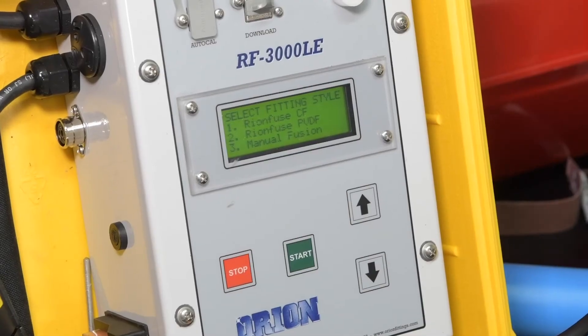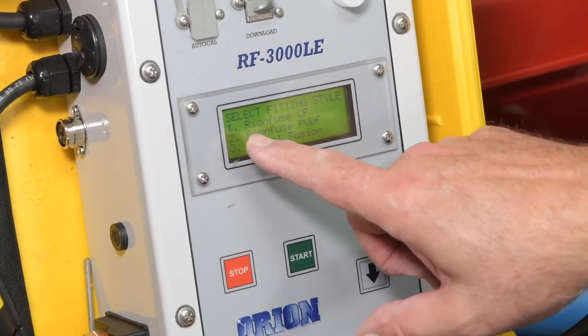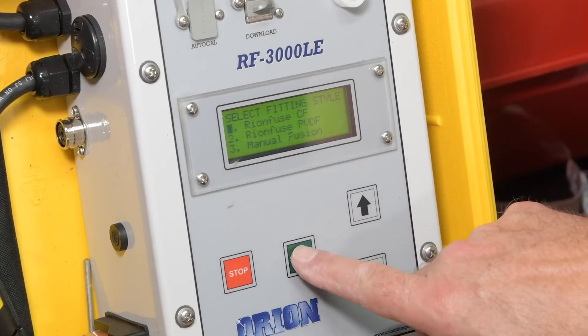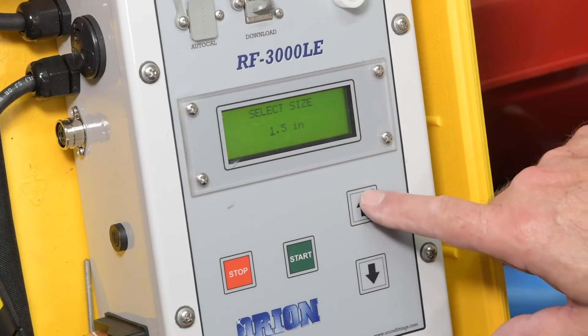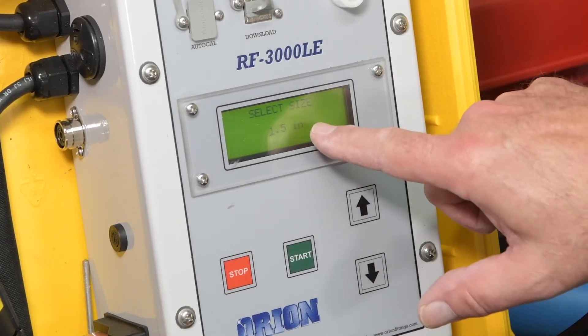On the controller, highlight the proper fitting style and press the start button to confirm your selection. Next, use the arrows to select the proper size of the joint being fused and press start to confirm the selection.